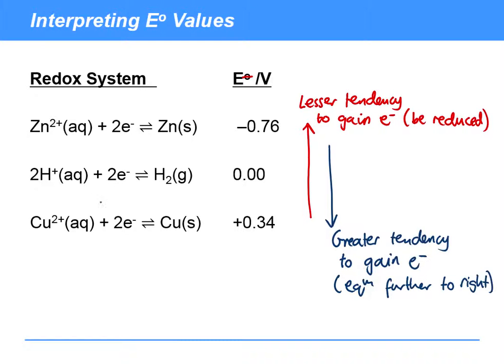Remember, we always write these with reduction as the forward reaction. And all it means if you're positive or negative is simply where you are in comparison to this standard hydrogen electrode. So in this case, copper has a greater tendency to gain, copper 2+ greater tendency to gain electrons than H+ has. And so it's a positive potential.